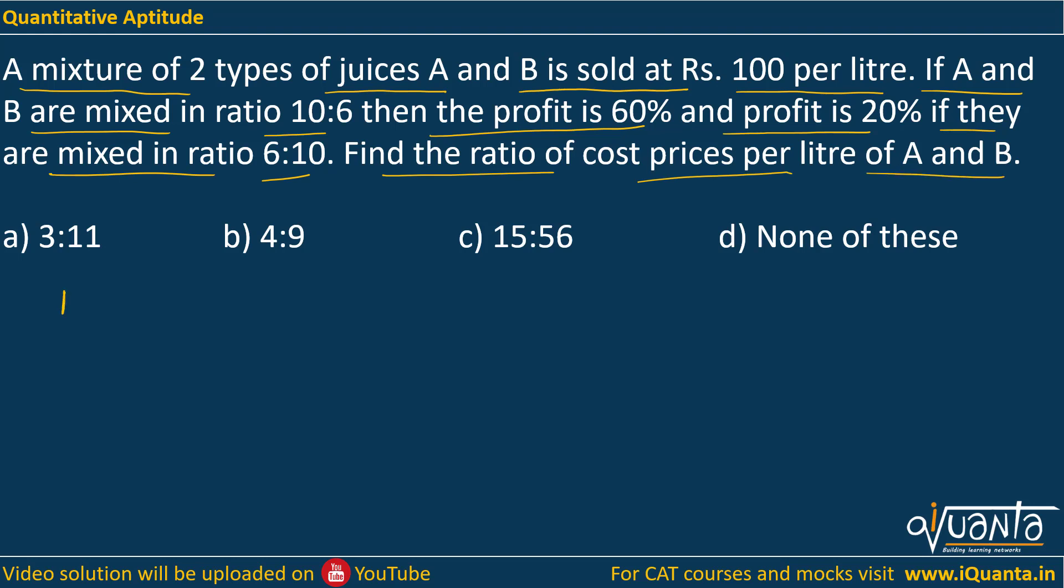So we are given that if A and B are mixed in ratio 10:6 and this mixture is sold at Rs. 100 per litre, then the profit is 60%. In another case, if A and B are in ratio 6:10 and this mixture is sold at Rs. 100 per litre, then the profit is 20%. Let me assume that there are 10 litres of juice A and 6 litres of juice B in this mixture. So in total we'll be having 16 litres of juice, and if this is sold at Rs. 100 per litre, then the total SP of the mixture is Rs. 1600.